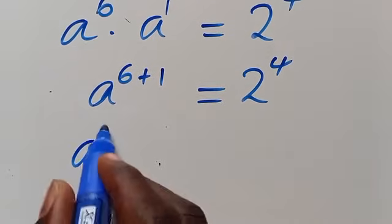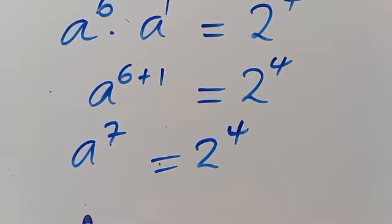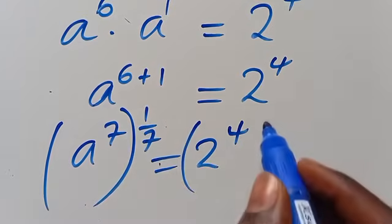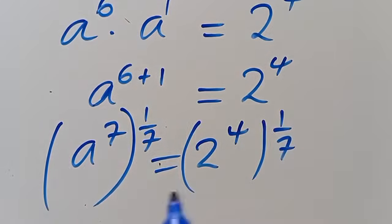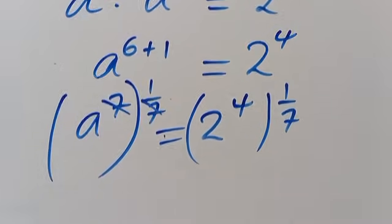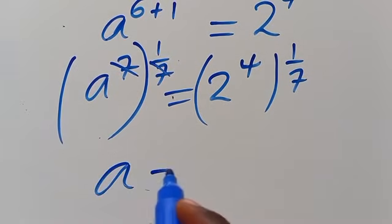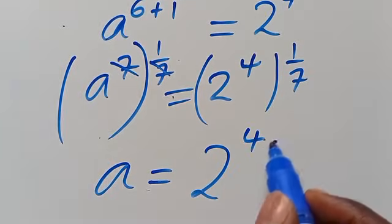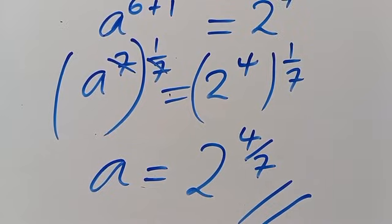We have A to the power of 7 equals 2 to the power of 4. Then we take the power of both sides by 1 divided by 7. We cancel this, so we have A equals 2 to the power of 4 divided by 7. This is the value of A.